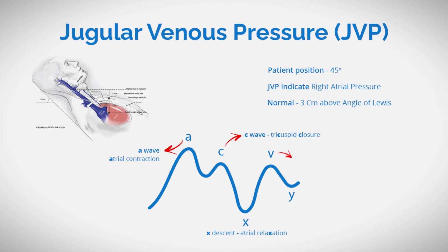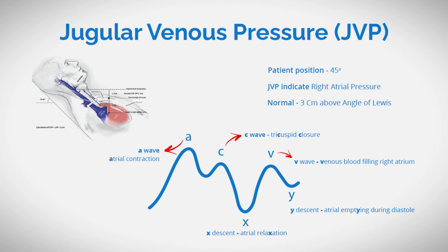The V-wave arises from passive blood filling the atrium against a closed tricuspid valve. The Y-descent occurs as the tricuspid valve opens, facilitating blood flow from the right atrium to the right ventricle.